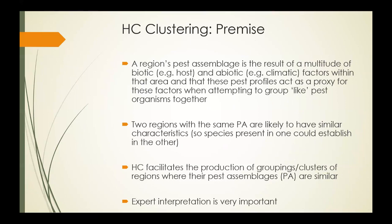The premise behind using clustering for identifying high-risk pests is based on the pest assemblages of the region under analysis. The pest assemblage is simply the pests found in a specific order and from a specific region. The pest assemblage of an area is the result of a multitude of biotic and abiotic factors—the hosts, the environment, the climate. These pest profiles or assemblages can act as a proxy for the biotic or abiotic factors in an area.